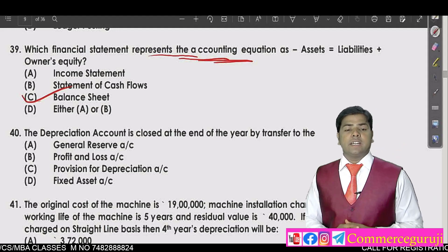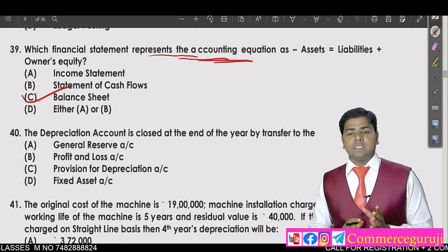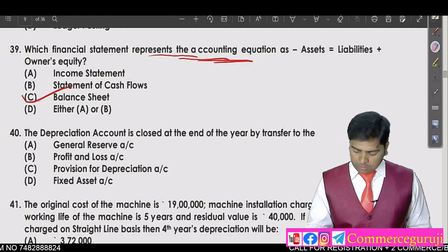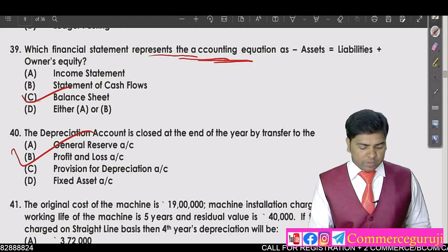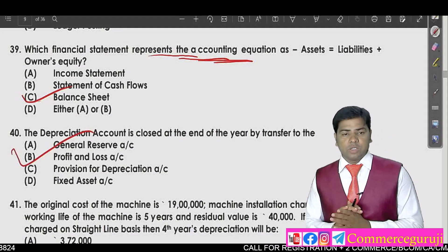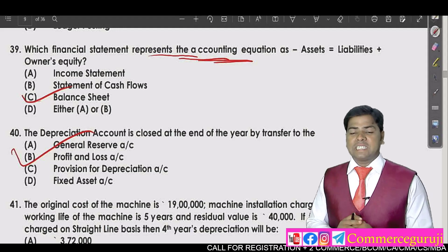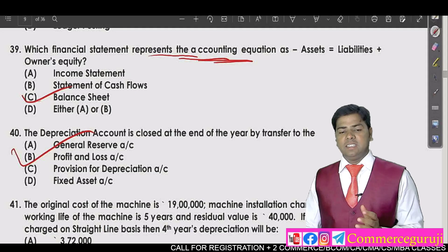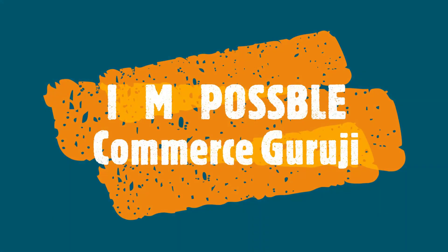Question 40: The depreciation account is closed at the end of the year by transfer to the profit and loss account. That is the correct answer. We will continue with question 40 in the next session. Please subscribe to the channel and click on the bell icon so you don't miss the next episode.